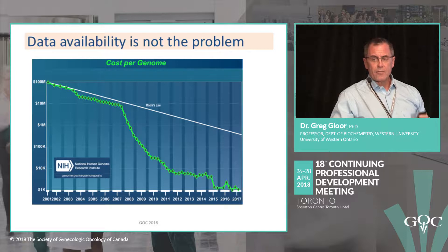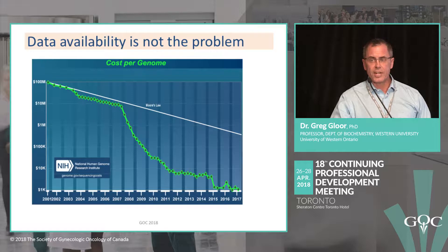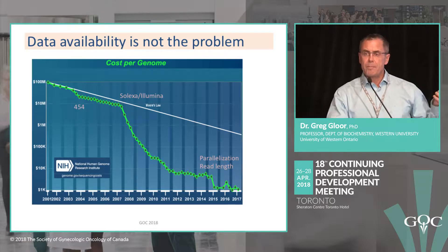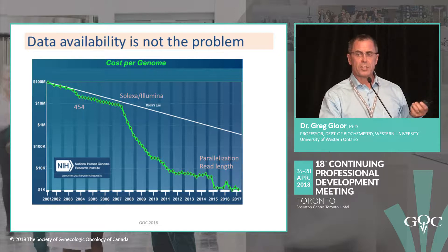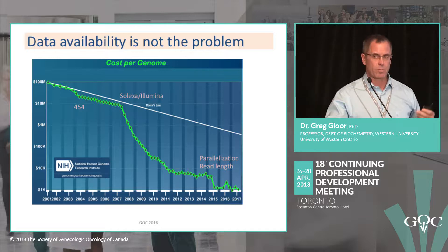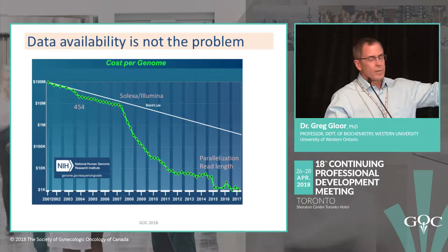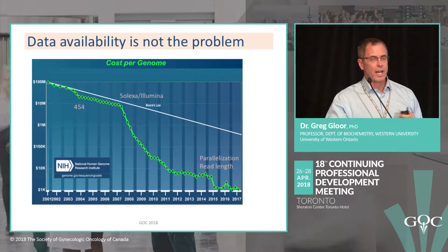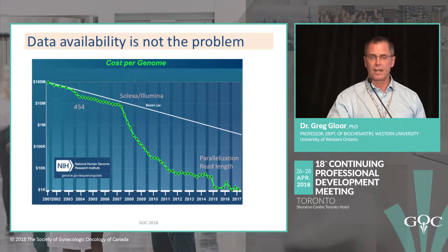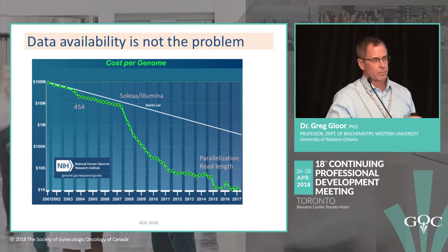Data availability is not the problem. Here's a chart of the cost per human genome from around the turn of the century to today. The cost to sequence a human genome is now roughly a thousand to fifteen hundred dollars, depending on who you ask and how much profit they want to make. We have various high-throughput sequencing platforms illustrated here, and the price drop is due to massive parallelization and longer read lengths.